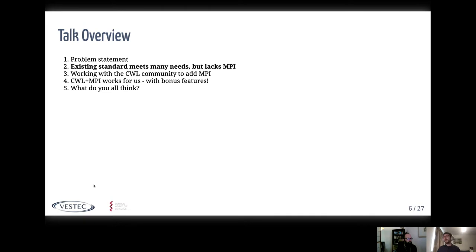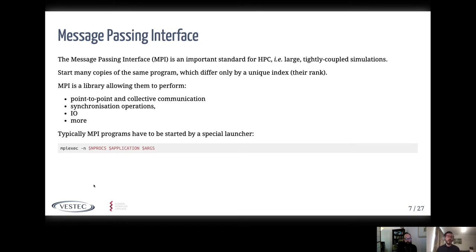Why didn't the Common Workflow Language and its tooling work with MPI? For anyone who doesn't know, MPI — the Message Passing Interface — is probably one of the most important standards for high performance computing, meaning large tightly coupled simulations. You start many copies of the same program across one or more servers and they differ only by a unique index called their rank. MPI is a library that allows these programs to communicate by passing messages in a point-to-point way, do collective communications, synchronisation, and input/output.